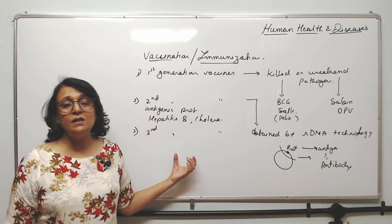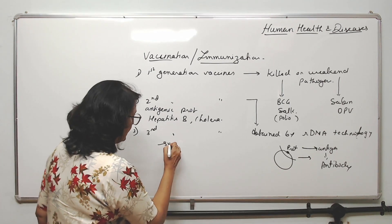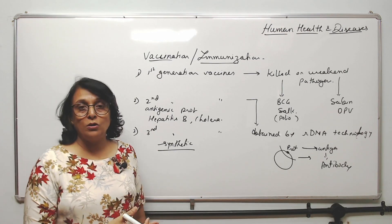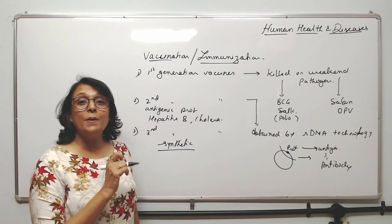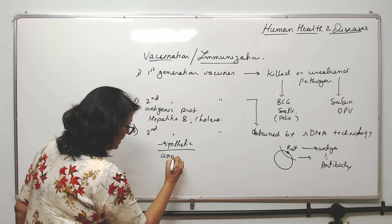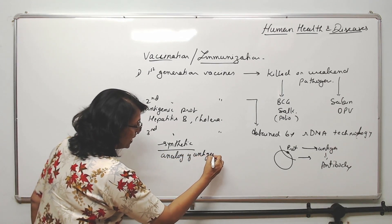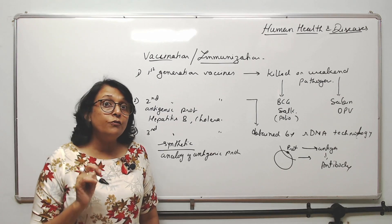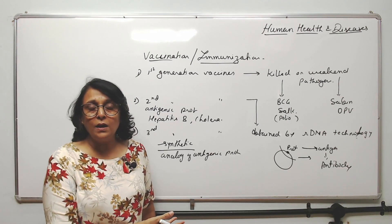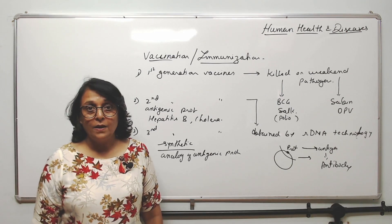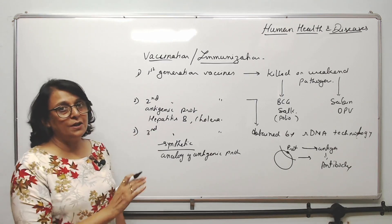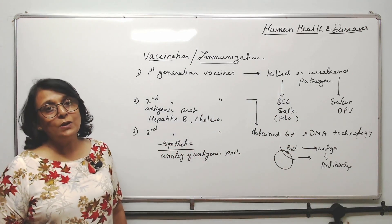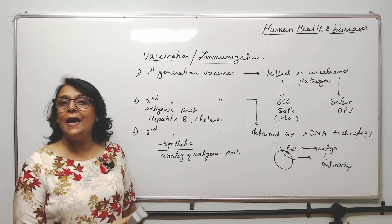Third generation vaccines are going to be synthetic vaccines. Synthetic vaccines means these are going to be some molecules which are analogues — analogues of that antigenic protein. So it is going to be something else, not a protein exactly, but it is going to function like a protein. And because it is some other chemical, it can be synthesized in a factory. Right now we do not have any third generation vaccine available. The research is going on and scientists are working on this, and as soon as we get synthetic vaccines we will not need any living organism for that.